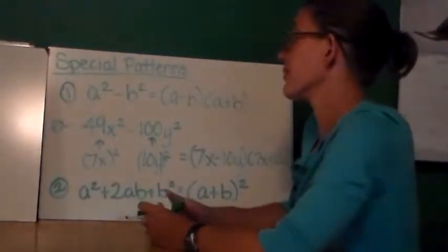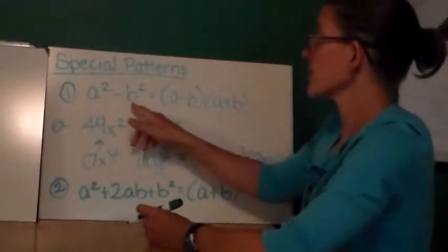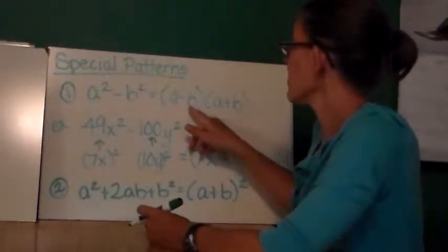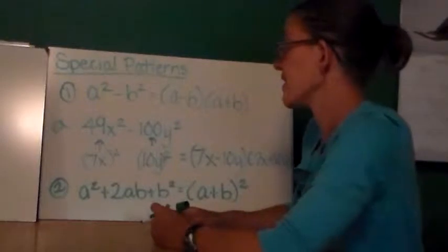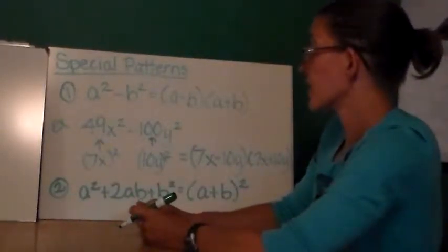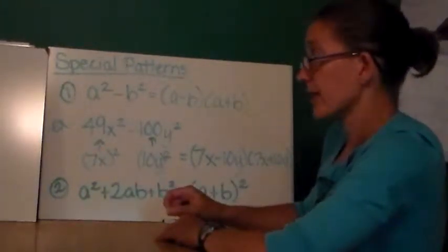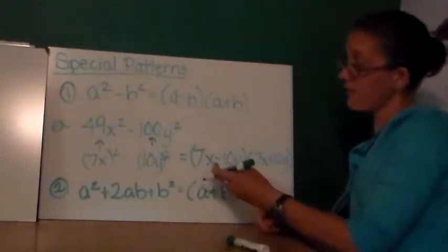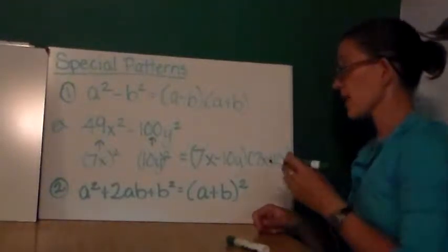Some special patterns you should know. Most popular is the difference of two squares. a squared minus b squared is equal to the product of a minus b times the quantity a plus b. An example, 49x squared minus 100y squared. Well, 49x squared is 7x quantity squared, and 100y squared is 10y squared. I factor it as 7x minus 10y and 7x plus 10y.